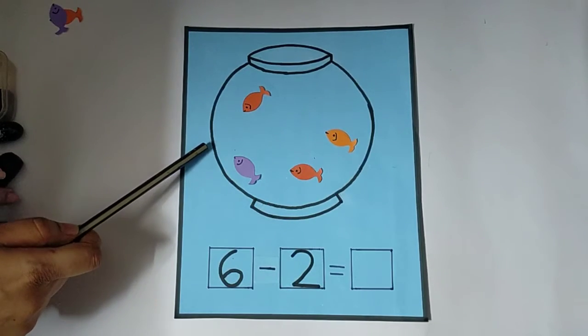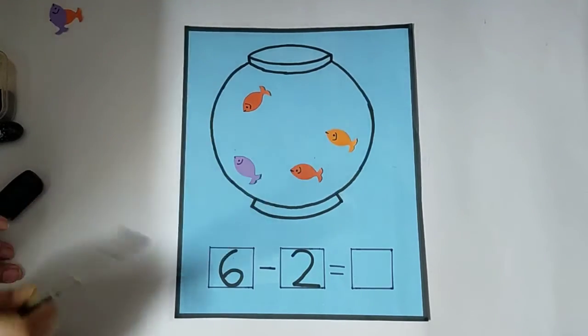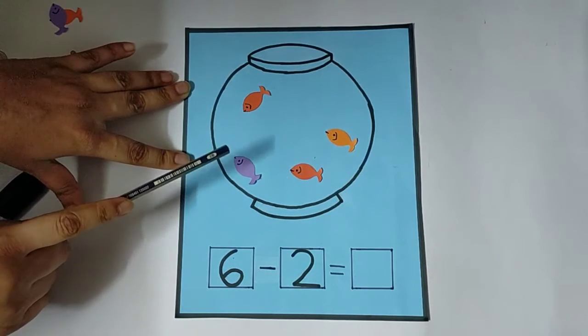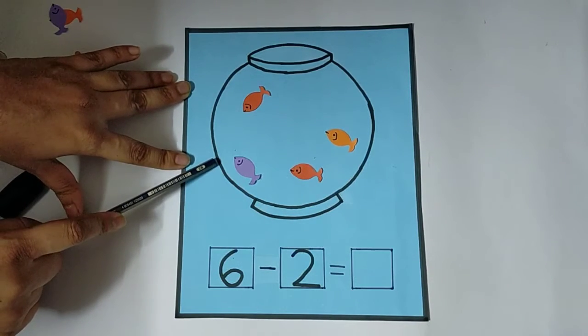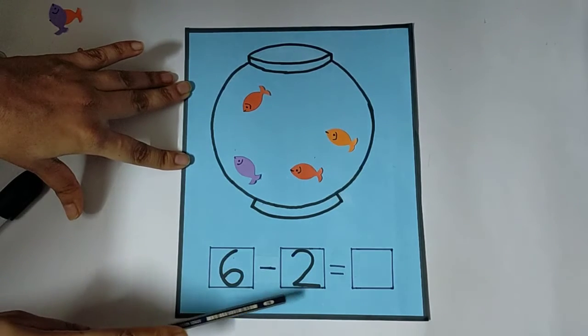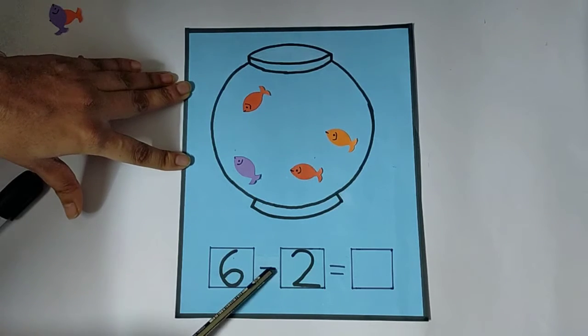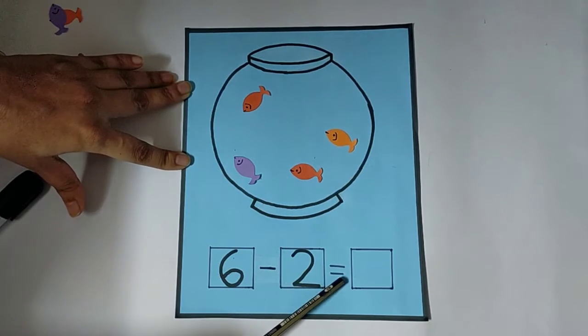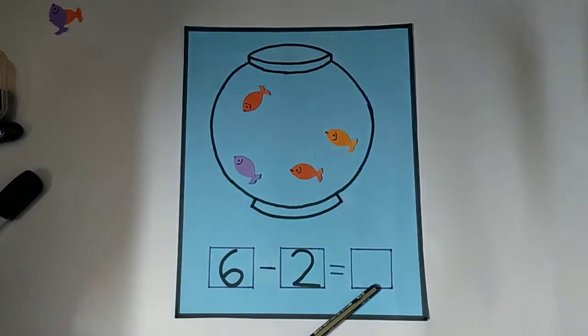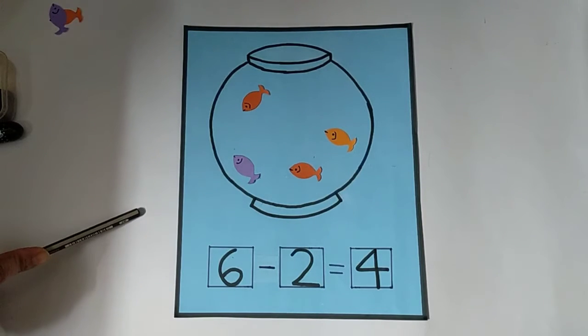So, how many fish? One, two, three, four. Now, can you remember how many fish were there in the bowl? There was six and two has gone away. Six minus two equals to what? Four, right? So, this is called subtraction.